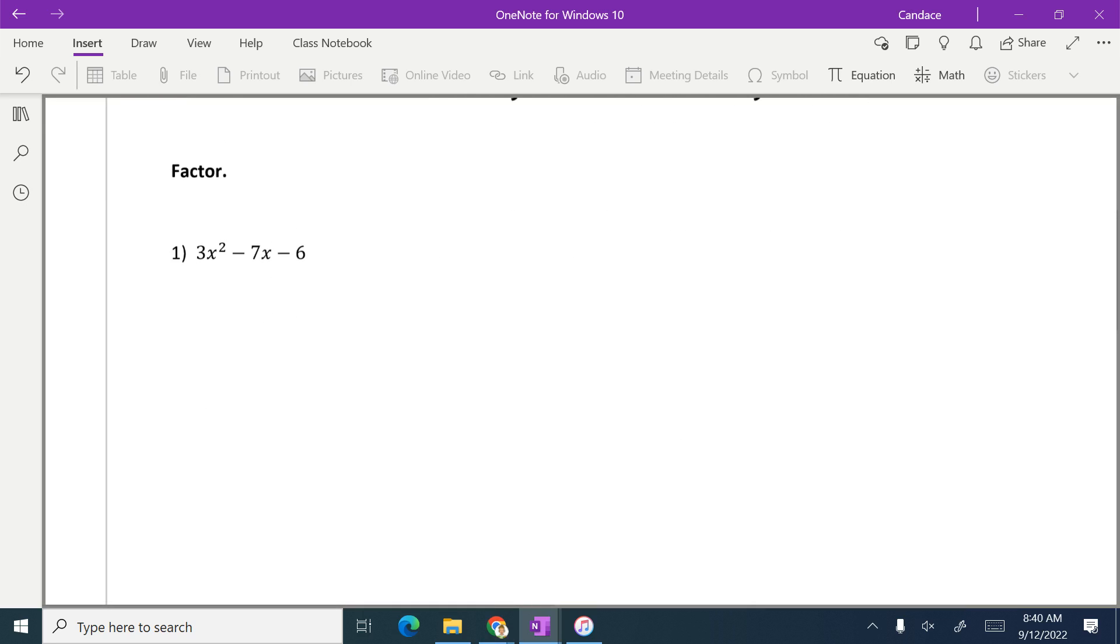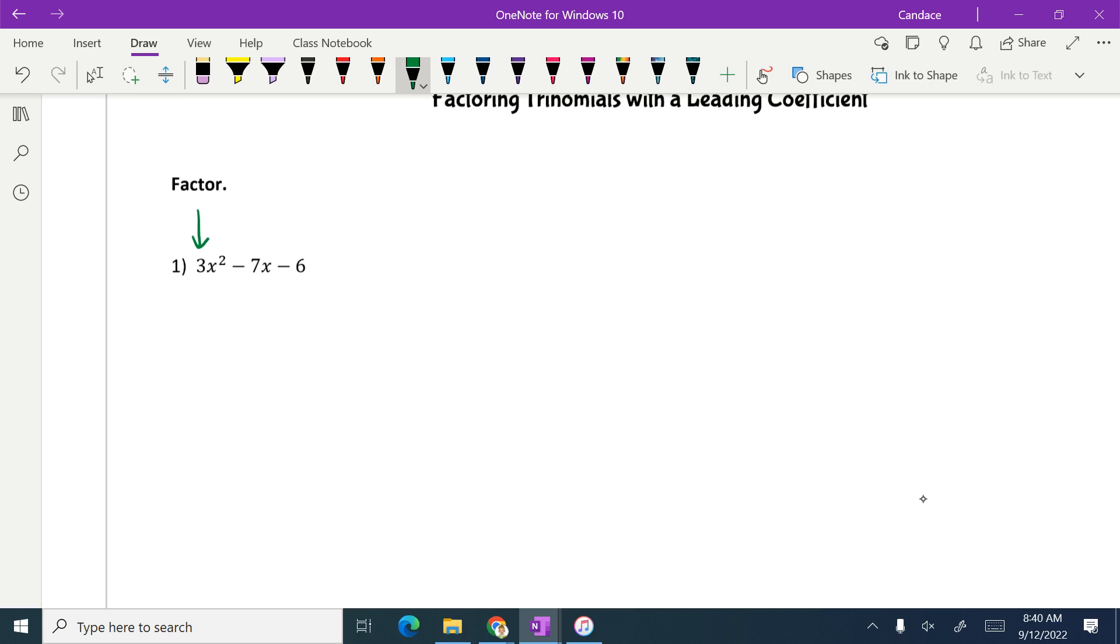So we're given a factor. Last week, or the last week we were here, we did like x squared minus 2x plus 4, right? It didn't have a leading coefficient in front. This part right here, that number is what we call the leading coefficient. So when I have a leading coefficient, I need to use, whenever you see that, you need to use a magic X and a box. And I'll explain what the box is here in a minute. It's basically like a multiplication table.